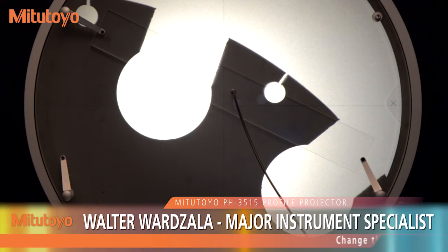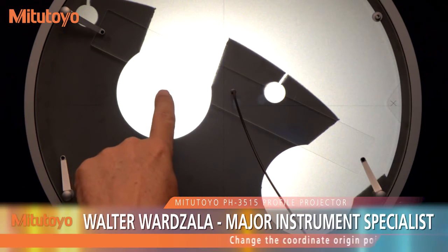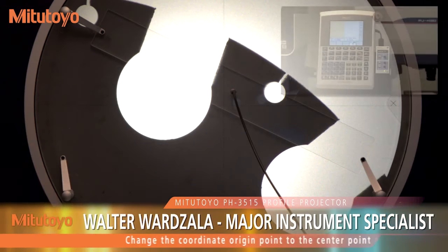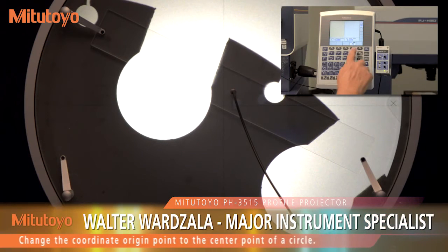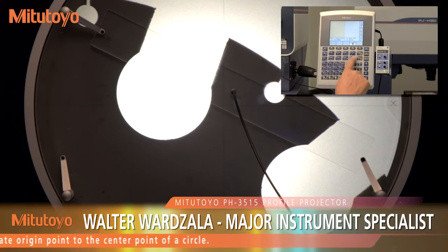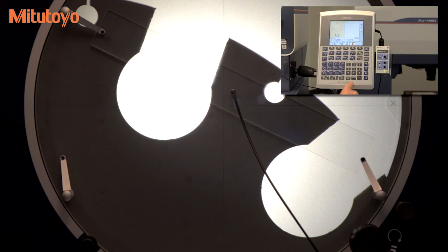To align a coordinate system to your part, rather than having to align the part to the coordinate system, use the basic commands to find the point or angle or line that you want to use to align your new origin.